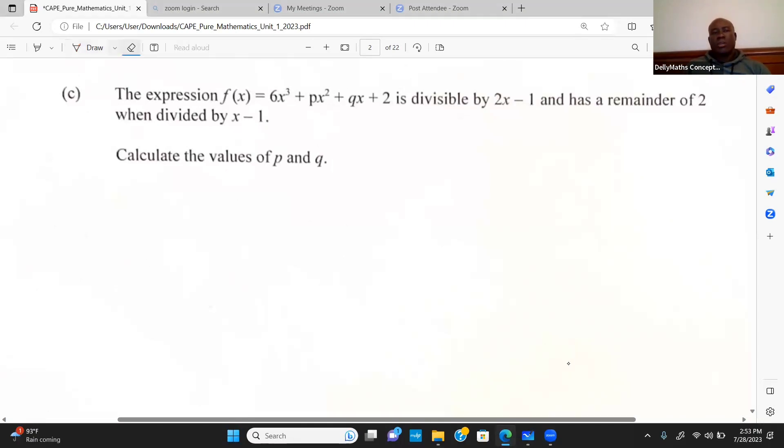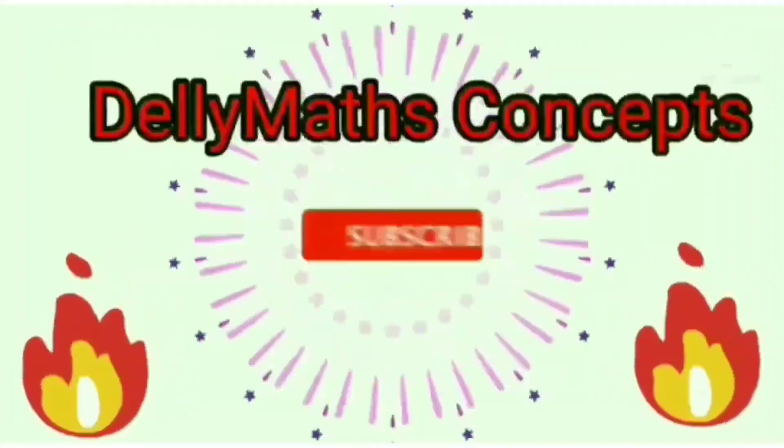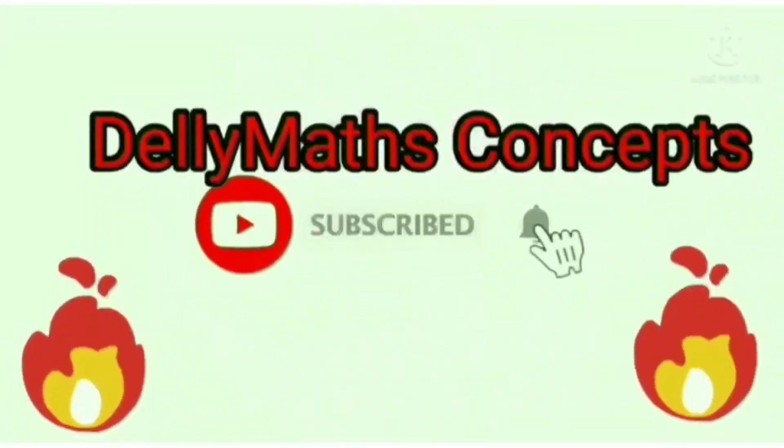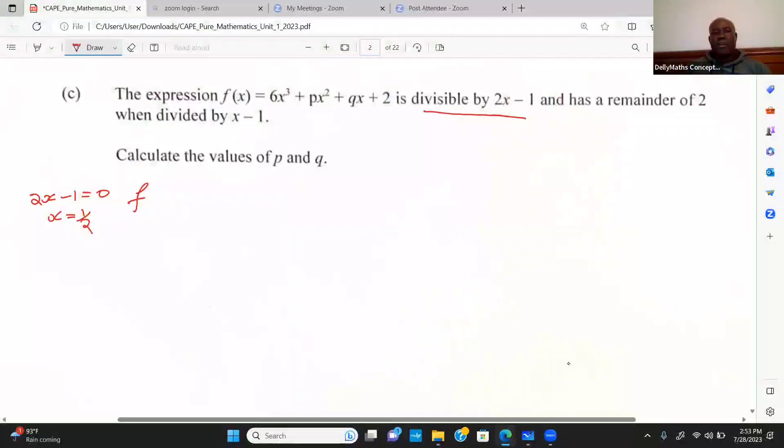Here's the deal. Let's focus on this part first. We're told that it is divisible by 2x - 1, which means if I should take 2x - 1 and set that to 0, solve for x where x is going to be a half. If I should evaluate f of a half, then it will equal 0 because it's a factor, meaning it's divisible. We're going to set up that to get one equation.